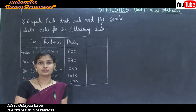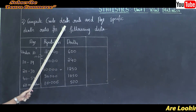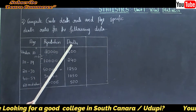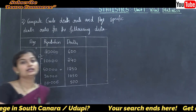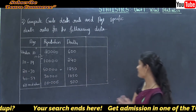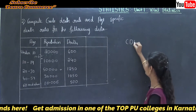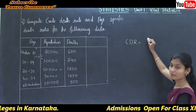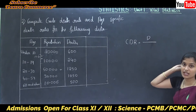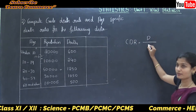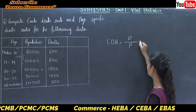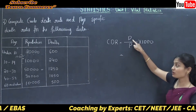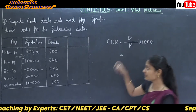Problem number 2: compute crude death rate and age-specific death rates for the following data. Given information are age, population, and deaths. Here first we need to calculate crude death rate. CDR formula is: number of deaths in the year, denoted by D, divided by total number of population in the year, denoted by P, into 1000. Based on our formula we need to calculate total of deaths and total of population.